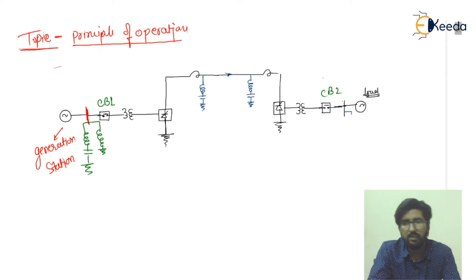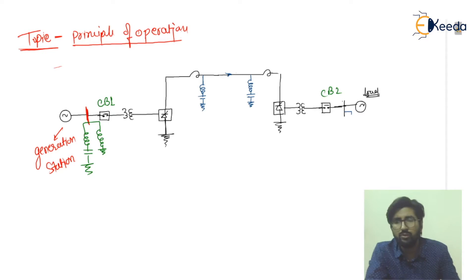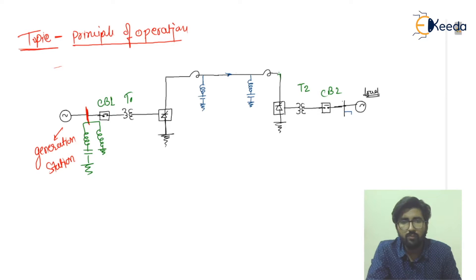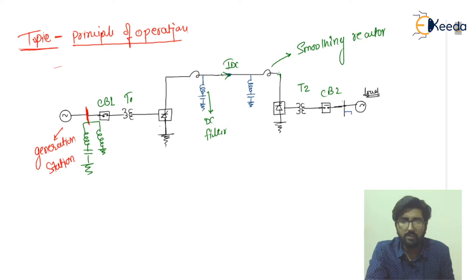There is circuit breaker number one and circuit breaker number two. A circuit breaker is a current-interrupting device — if there is a fault condition in the power system, the circuit breaker contacts open and interrupt the short circuit current. Then we have transformer T1 and transformer T2, the smoothing reactors, and the DC filters.